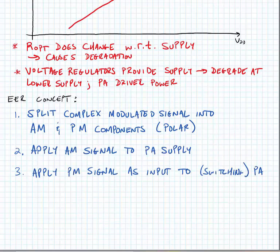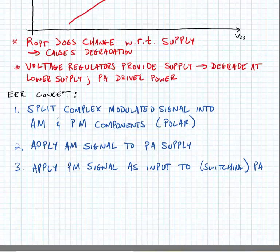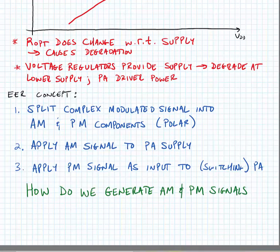I would note that we can apply these signals to either a switching PA or we can still use the EER concept with a saturated linear PA. In the next lecture we'll look at how we generate AM and PM signals from a complex modulated signal. We can do this using traditional analog techniques or we can do this in digital signal processing.